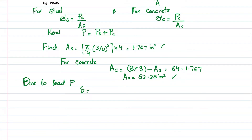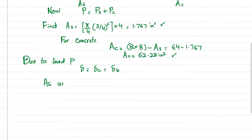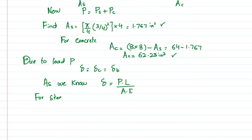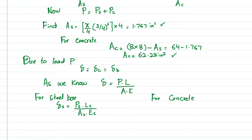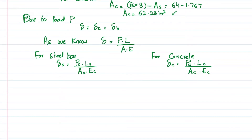The total deformation δ = PL / (AE). For the steel bars, δ_s = P_s × L_s / (A_s × E_s). For concrete, δ_c = P_c × L_c / (A_c × E_c). We will use the compatibility condition that δ_s = δ_c.